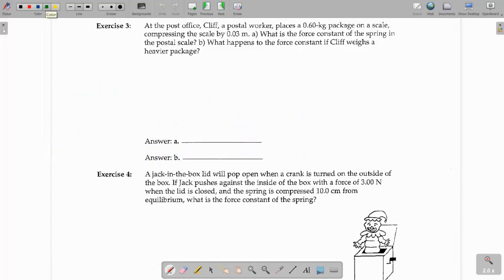At the post office, a postal worker places a 0.6 kilogram package, so that's going to be our mass, on a scale, compressing the scale by 0.03 meters. So, it compresses the scale. That is X. And then it says, what is the force constant of the spring? Or the spring constant, which is K.